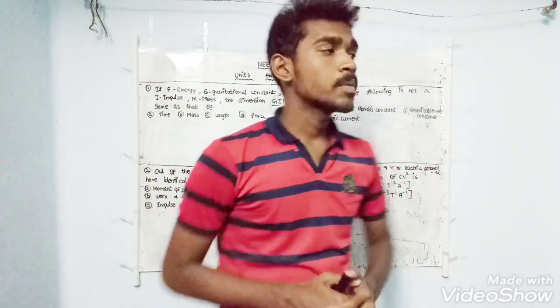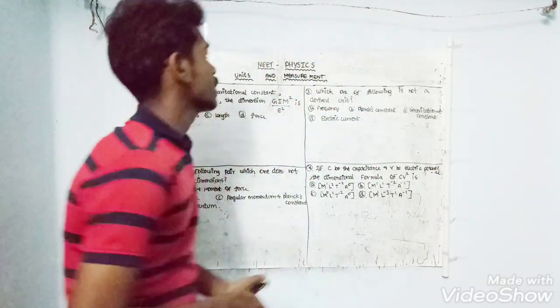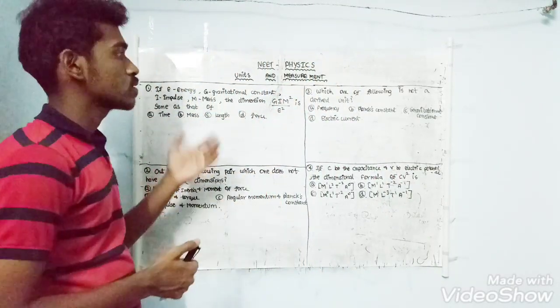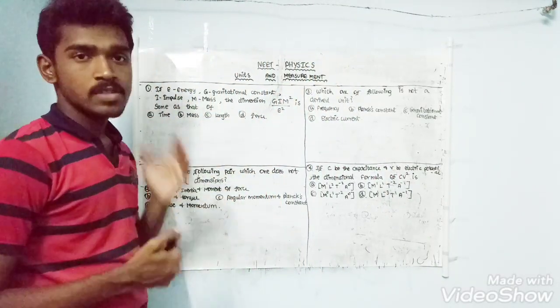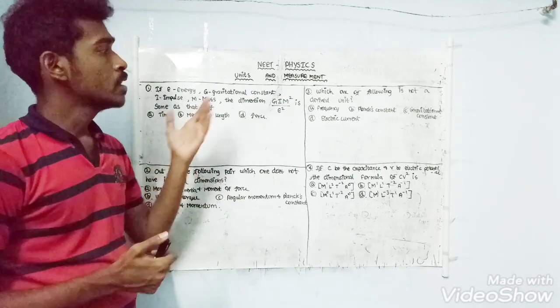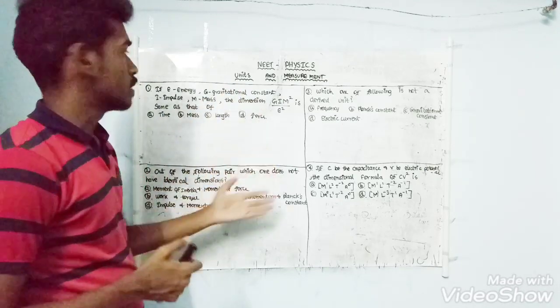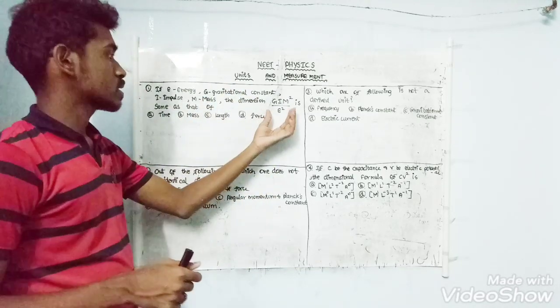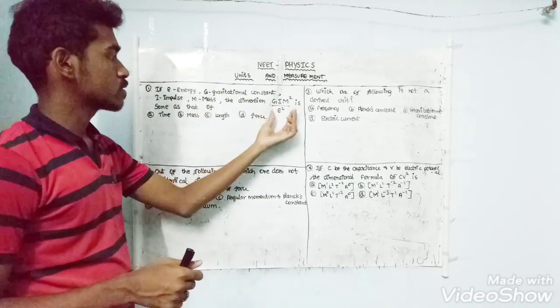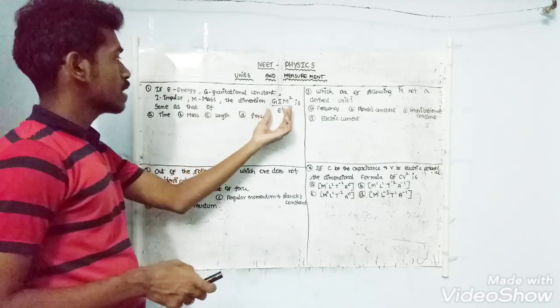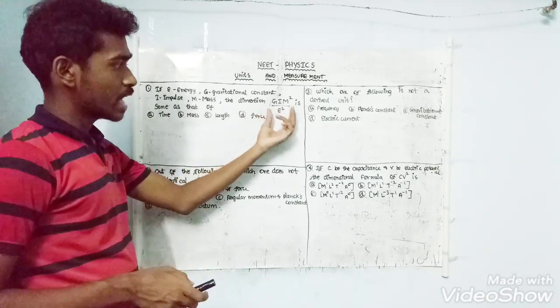Hello friends. We are going to talk about need physics — units and measurement is one topic. We are going to talk about need-based problems. First, we are going to talk about the expression G·I·M² divided by E².